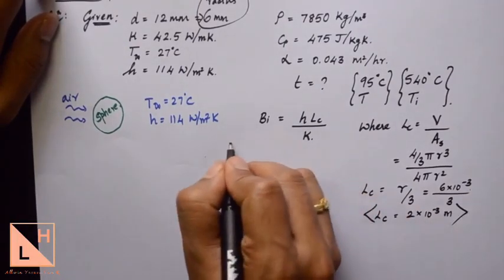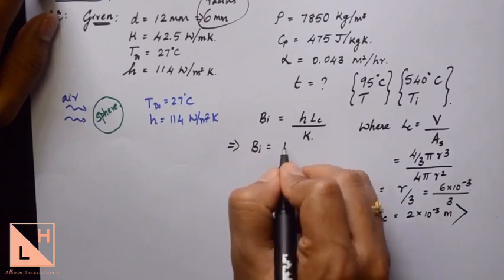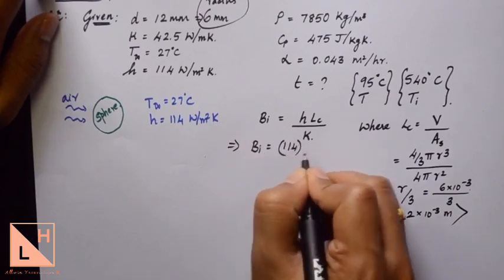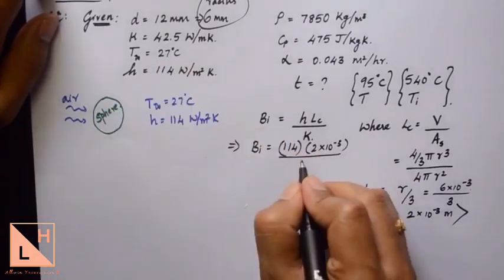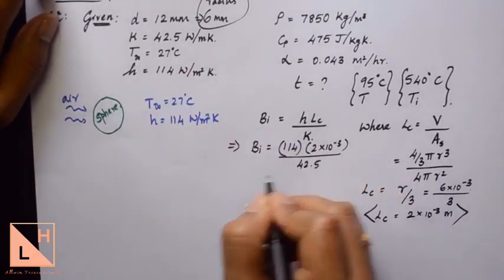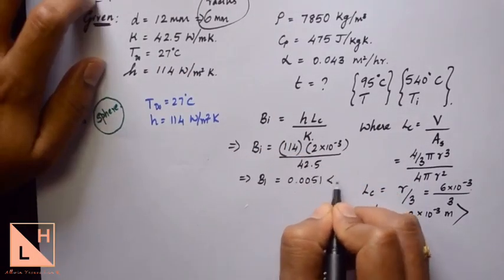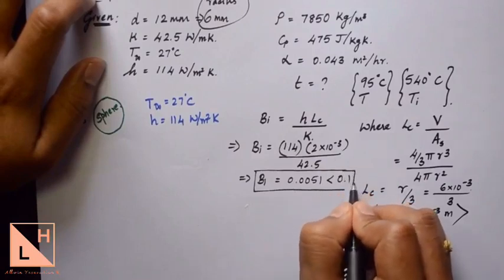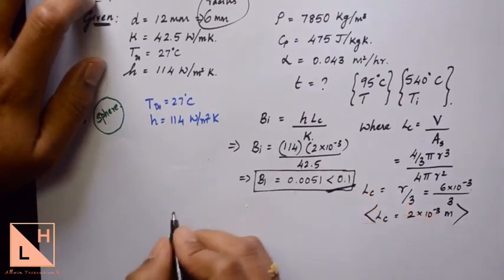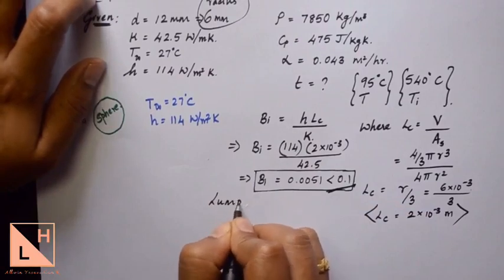Substituting into the Biot number formula, the Biot number value we get is less than 0.1, and hence lumped analysis can be applied.